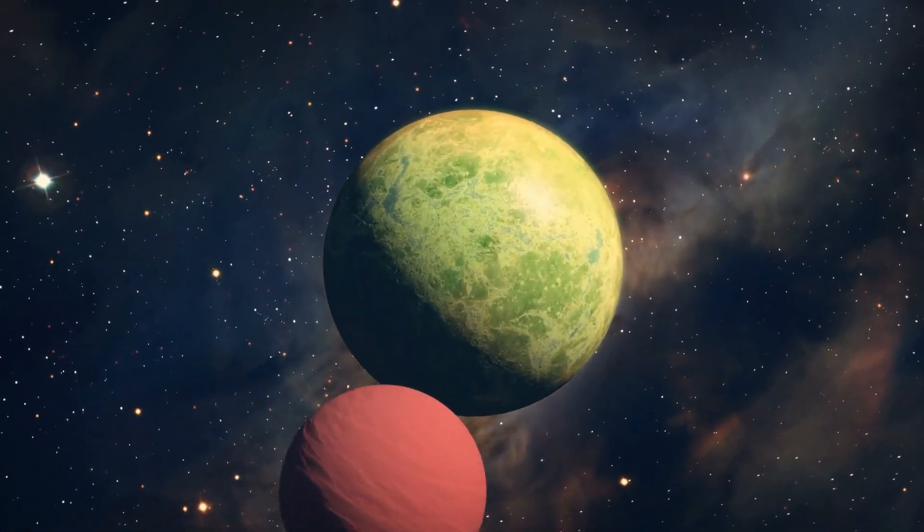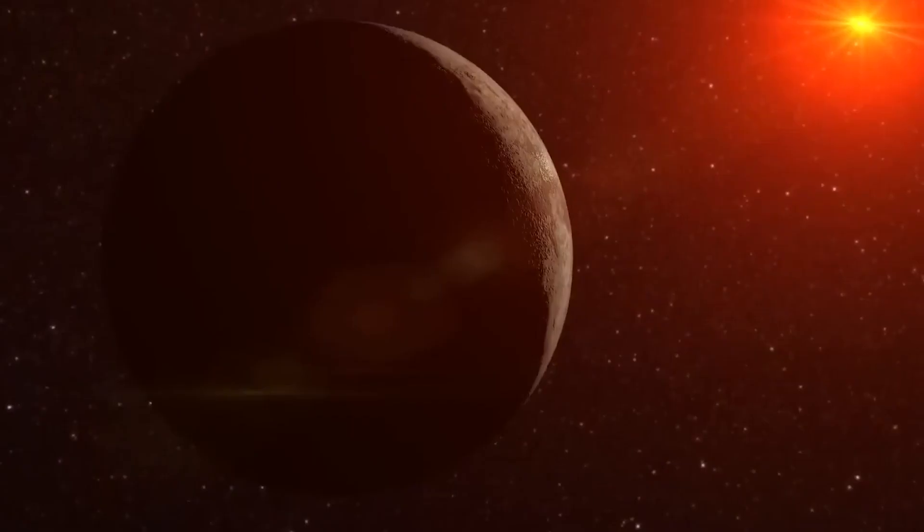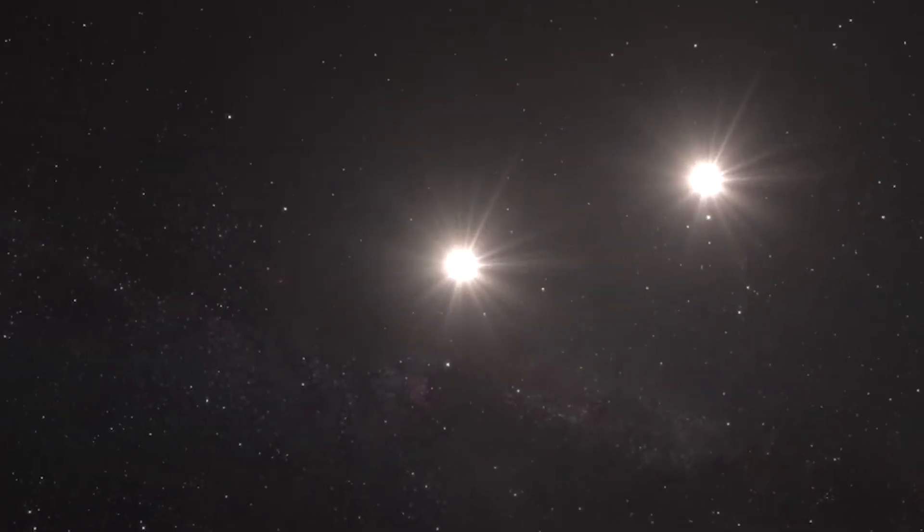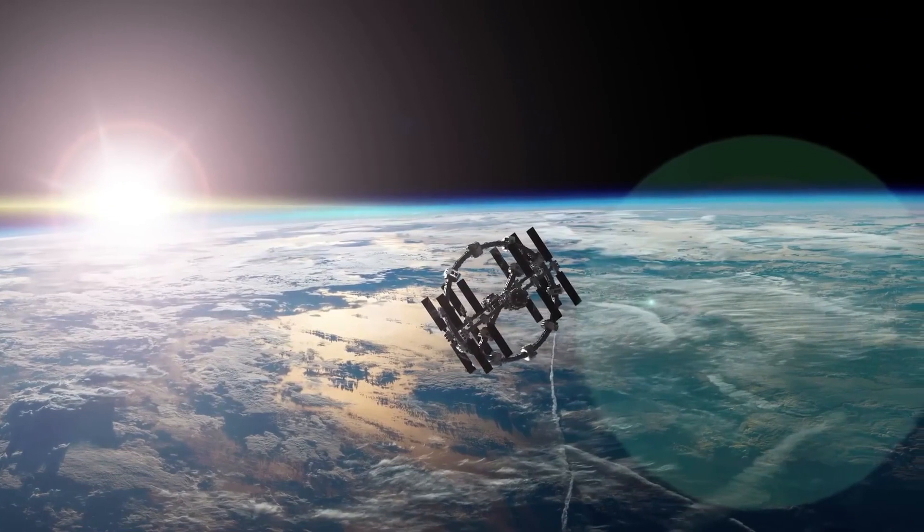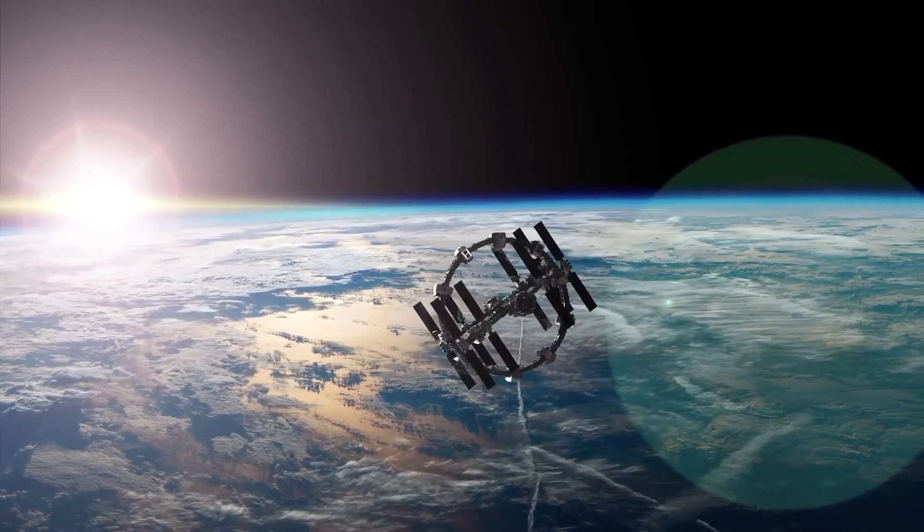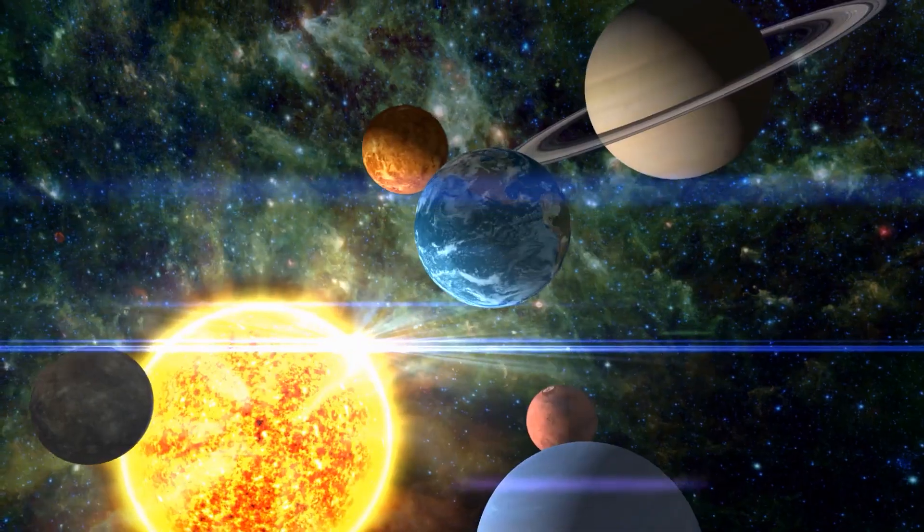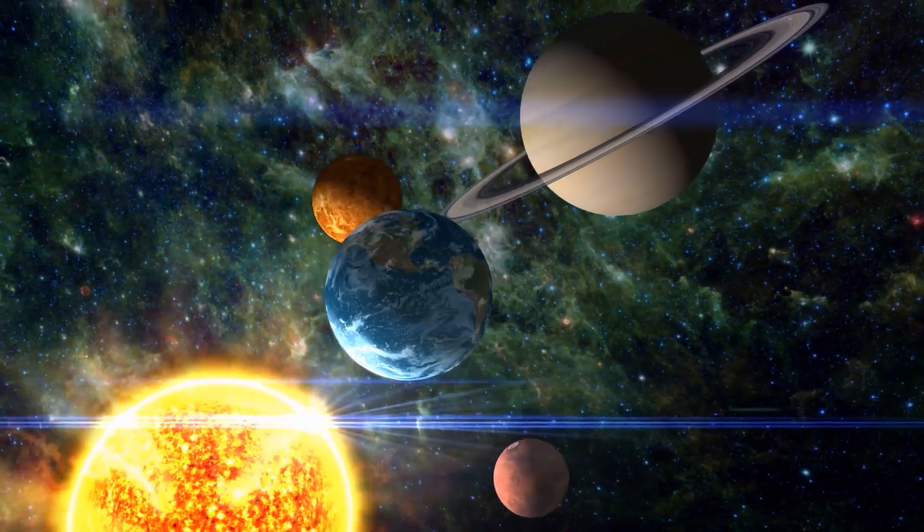Even within our solar system, the distances are immense, and it would take considerable time and effort to traverse them. For example, a spacecraft traveling at the speed of light would take approximately 8 minutes and 20 seconds to reach Earth from the Sun. To reach Pluto, it would take about 5.5 hours at the speed of light.